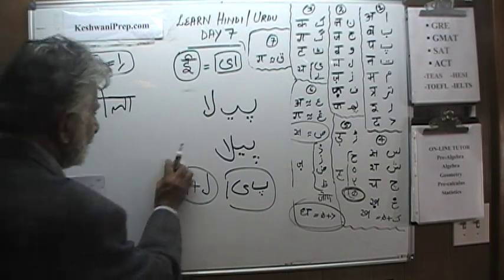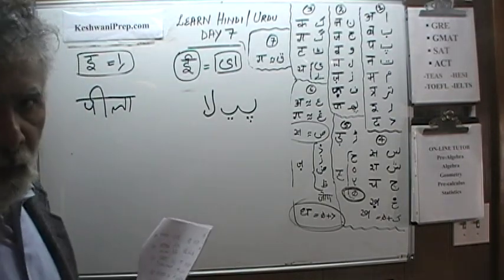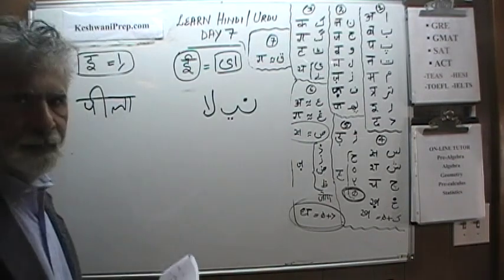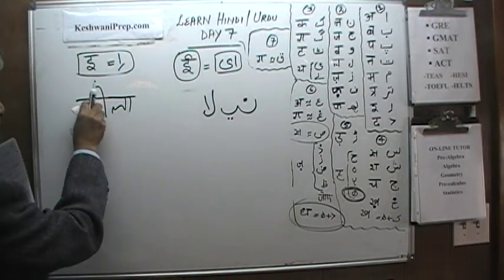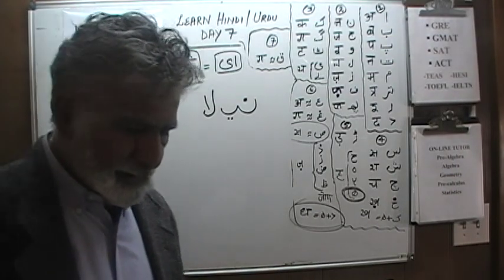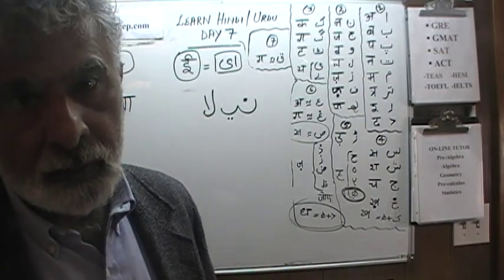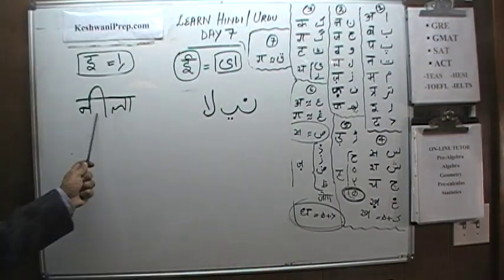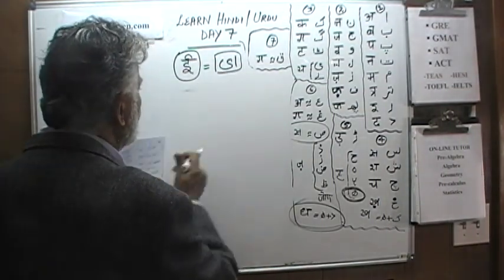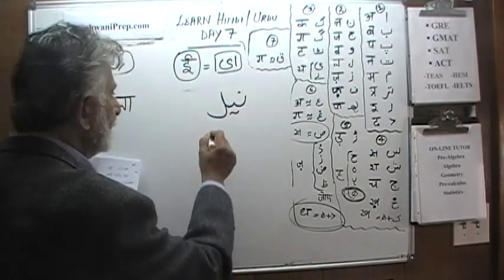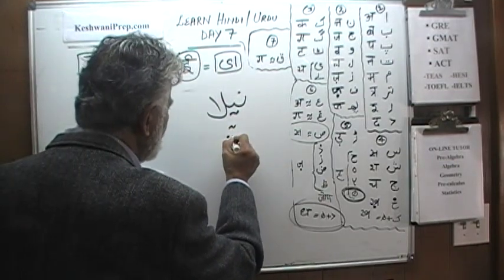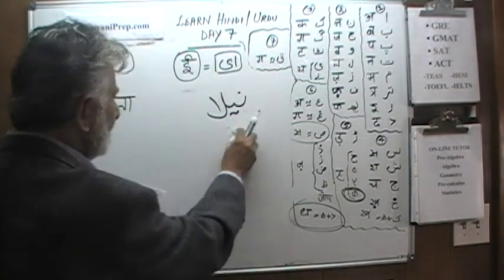One more word: Neela. Writing Noon, Choti Ye, Lam, Aleph — joining them together gives Neela. It also has Badi Iki Matra and Aki Matra. Neela means blue.